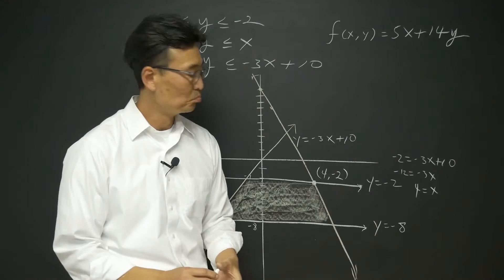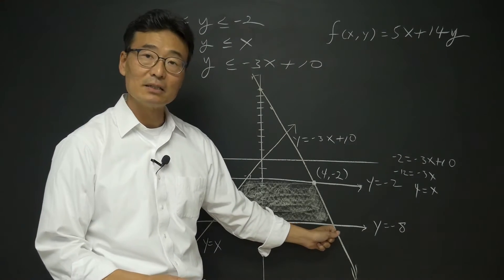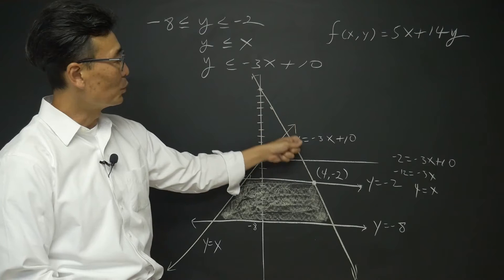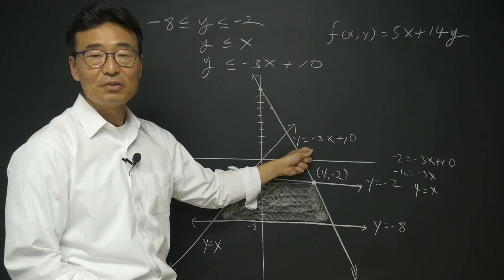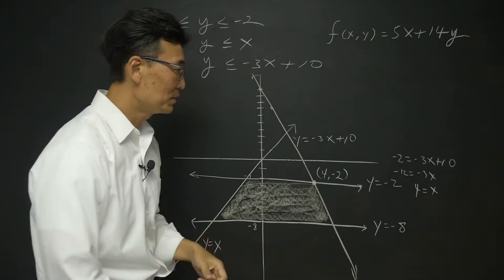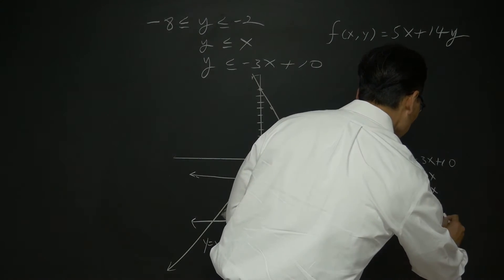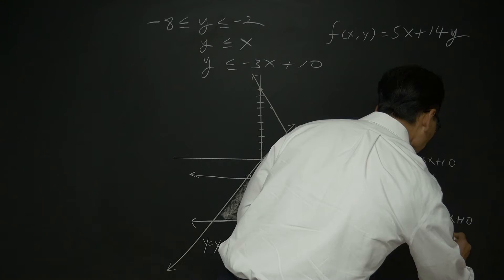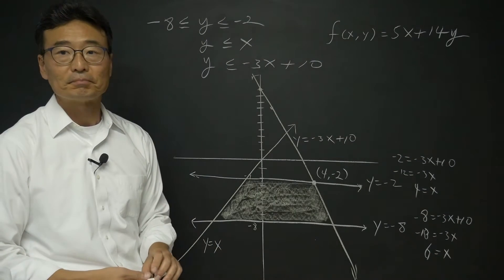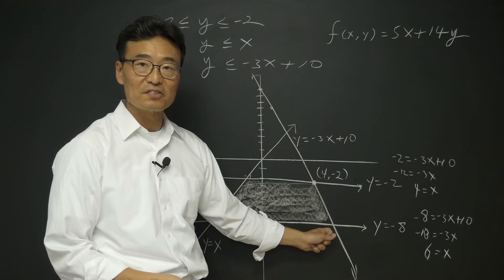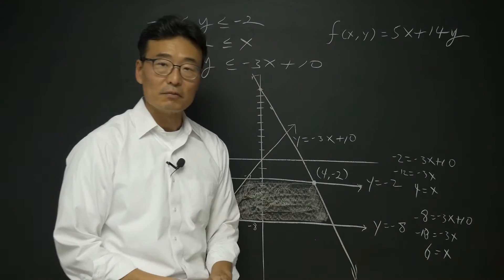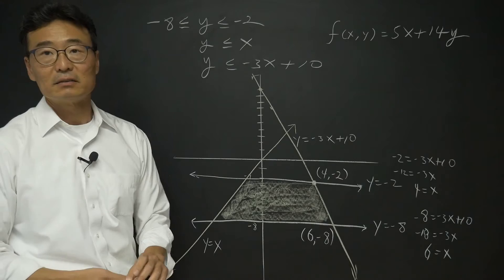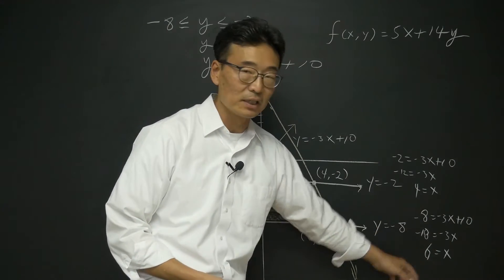Let's do the next point below. This is where y equals negative 8 intersects with y equals negative 3x plus 10. Substituting negative 8 for y gives us negative 8 equals negative 3x plus 10, so negative 18 equals negative 3x, or x equals 6. This point has the coordinate 6 comma negative 8. It's nice that we already know the value of y without plugging in x.